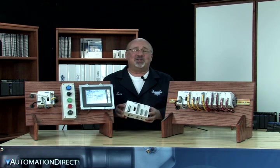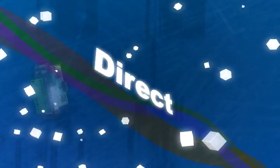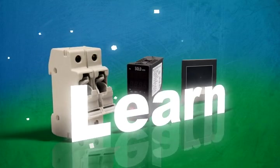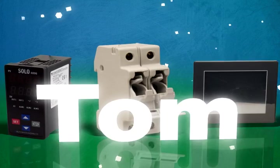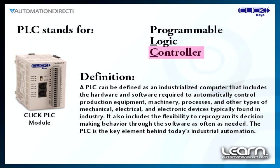A PLC is the key element behind today's industrial automation, but what exactly is a PLC? In this video I'll walk you through the basics of what a PLC is, some of its practical uses, and even go into some of the PLC's inner workings. PLC is short for Programmable Logic Controller. A PLC is an industrialized computer used to automate production equipment and or processes. The PLC's hardware and software allow it to monitor the status of incoming events and control the outcomes, and it has the flexibility to reprogram its decision-making behavior through software as often as needed.